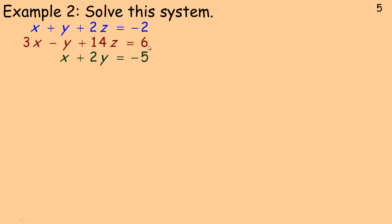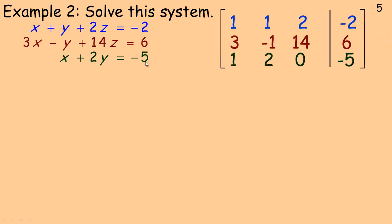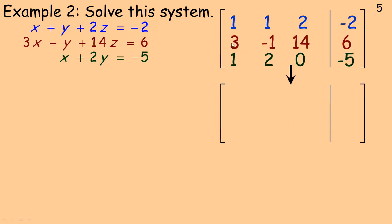One more example, similar to the last one but with a different outcome. We write out the augmented matrix with coefficients 1, 1, 2, negative 2, and so on. Notice there's no z in the third equation, so we put a 0 in the z column.